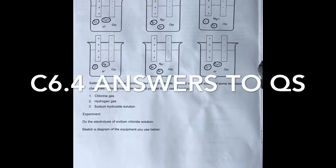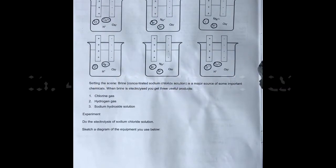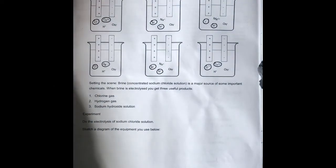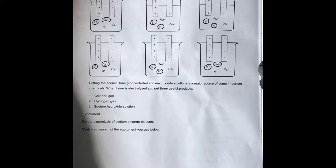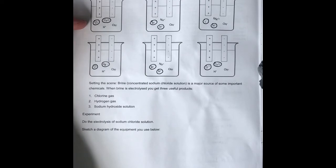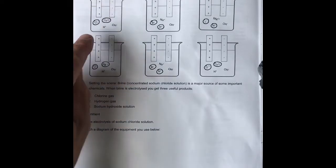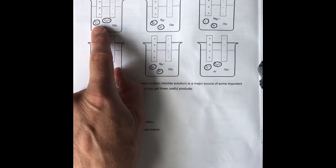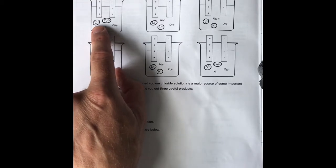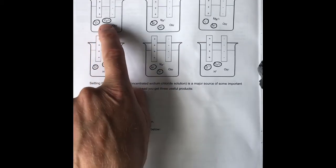C6.4 electrolysis of brine - answers to the questions. You're given a number of examples here. You need to decide which of the ions will be given off first or discharged first. In each case, we've got chlorine and copper. Chlorine is a halogen, so it's always given off in preference to any other negative ion. Copper is less reactive than hydrogen, so copper will be given off first. Here, bromine being the halogen is given off.